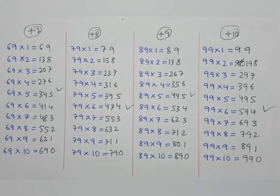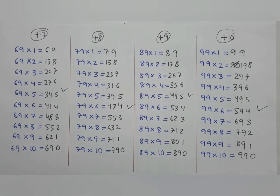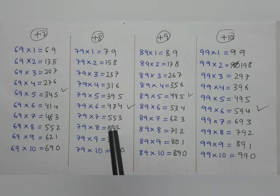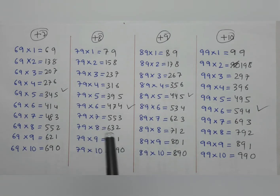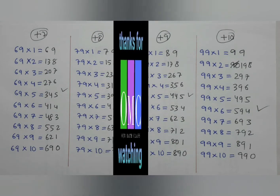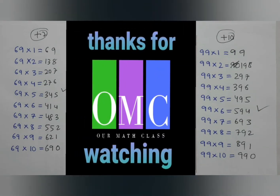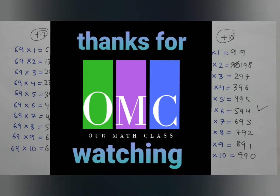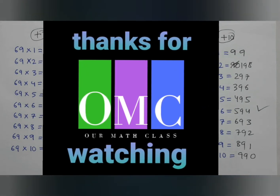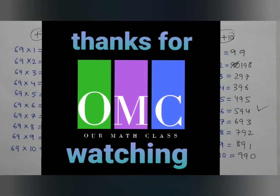So there we have the 99 times table. You can write the multiplication table of any number ending in 9 using this method within a few seconds. I hope this video was interesting. Please support the channel by liking, sharing, and subscribing. Thank you very much and have a good day.